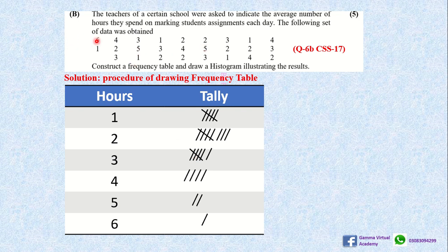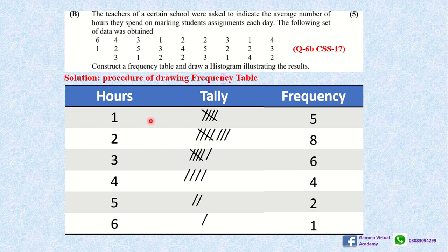Six appears only one time. Now we write the frequency of each hour: one is five times, two is eight times, three is six times, four is four times, five is two times, and six is one time. This is the completed frequency table.